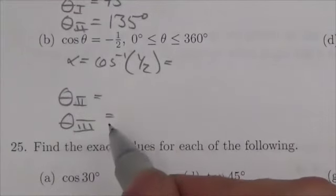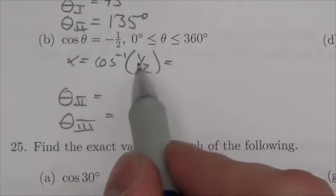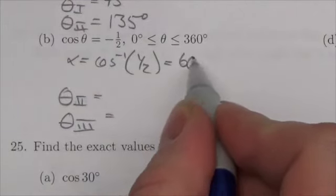Okay, the negative was used to tell us what quadrants it's in. I just want the size of the value here to give me the reference angle. So cosine becomes one-half at 60 degrees.